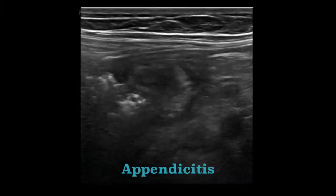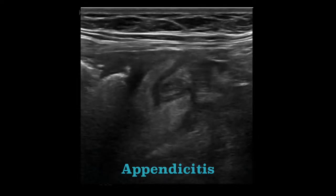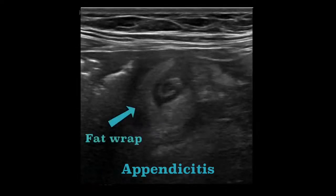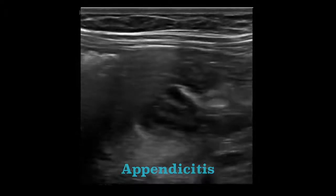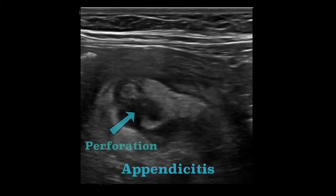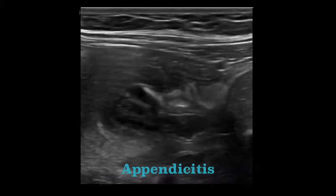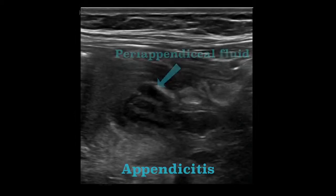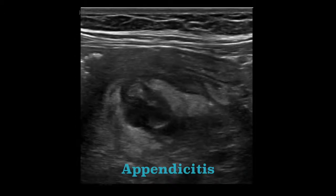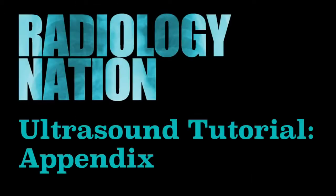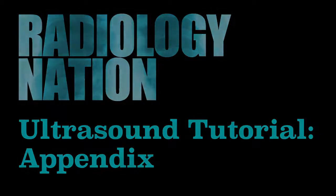Here's another example of appendicitis on ultrasound. Again, we have a dilated, thick-walled appendix. This time, there is a discernible fat wrap of inflammatory tissue. As we continue scanning, we see a defect in the wall of the appendix. There is also some surrounding peri-appendiceal fluid. These findings are suggestive of a perforated appendix. During the course of this video, I hope to have showed you a strategy for imaging the appendix with ultrasound. This is a difficult skill to acquire, but with practice, you can diagnose appendicitis effectively and without the radiation dose of CT.